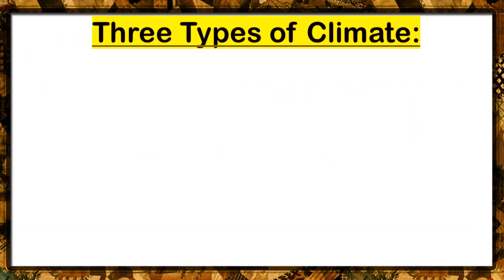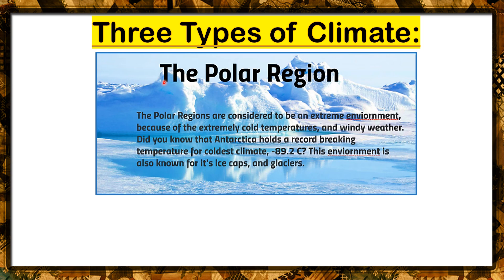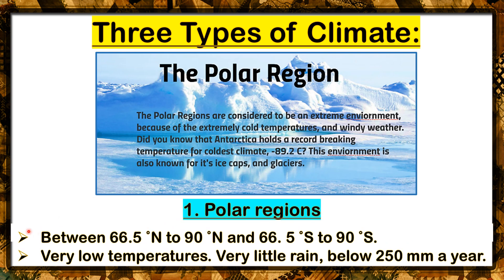Let us study about the three types of climate. The first is the polar region. Polar regions are between 66.5 degrees north to 90 degrees north, and 66.5 degrees south to 90 degrees south. They have very low temperatures and very little rain — below 250 millimeters a year. The polar regions are considered an extreme environment because of extremely cold and windy weather. Did you know Antarctica holds a record-breaking temperature for coldest climate at negative 89.2 degrees Celsius? This environment is also known for its ice caps and glaciers.